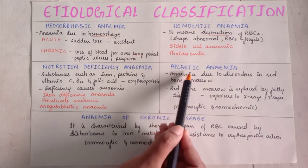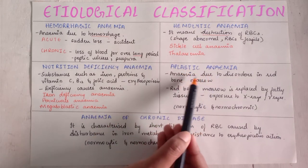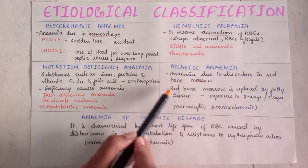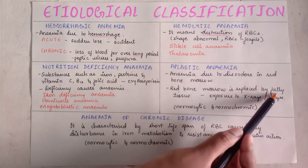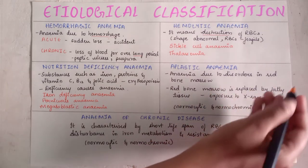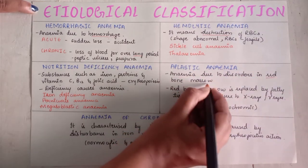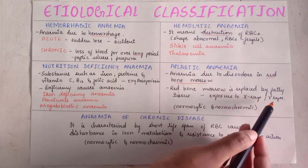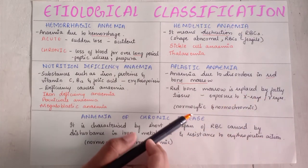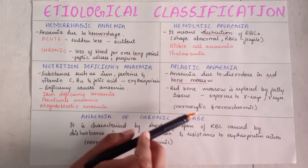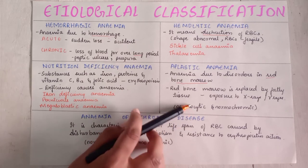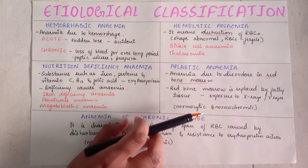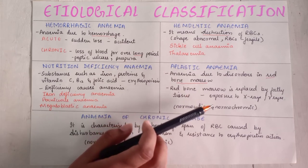Fourth: aplastic anemia. Here anemia is due to disorders in the red bone marrow — the culprit is the red bone marrow, which is replaced by fatty tissue. It usually happens when exposed to X-rays, gamma rays, or other types of radiation. In aplastic anemia, RBCs are normocytic and normochromic.